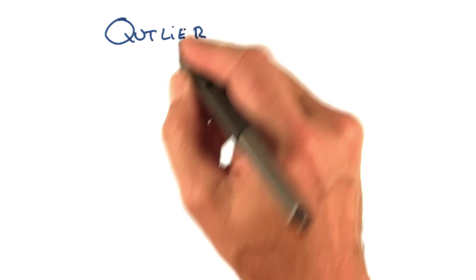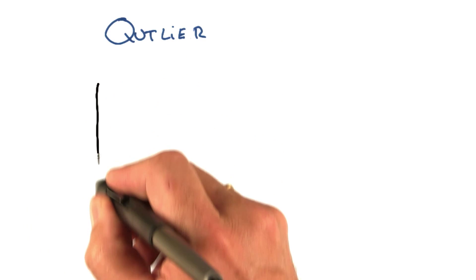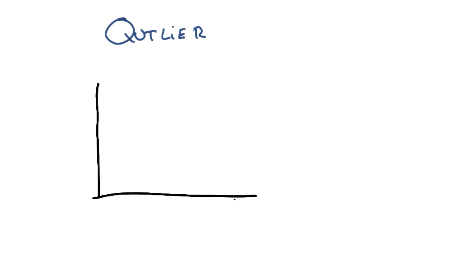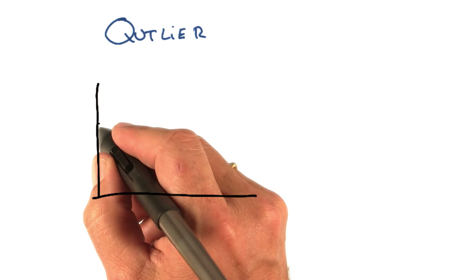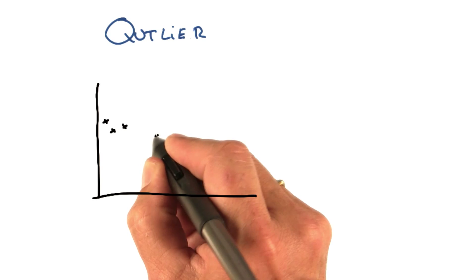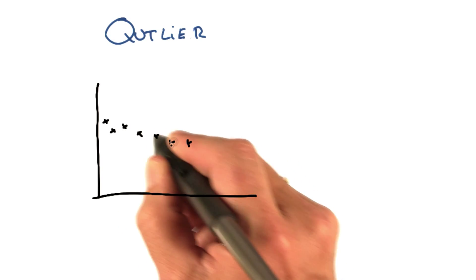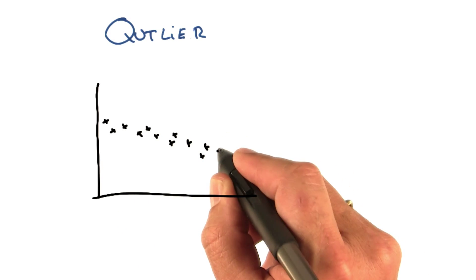We're going to talk now about something called outliers. I'm going to just draw a little example over here to illustrate what an outlier might be. Suppose you're measuring some phenomena, and you're getting this amazing data. It looks almost like a line. And then there's this one data point.